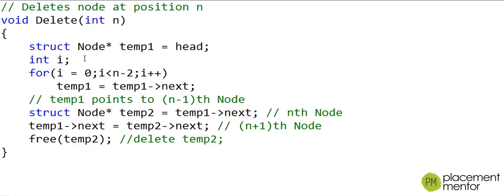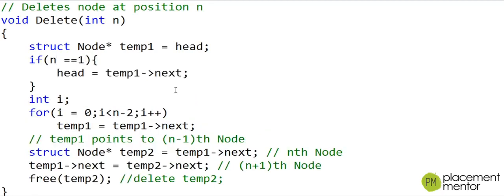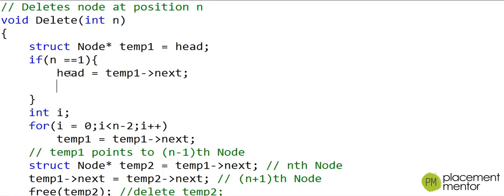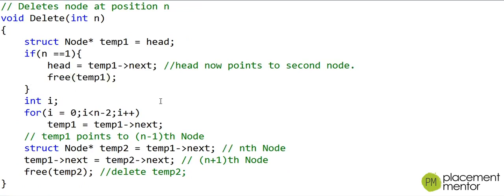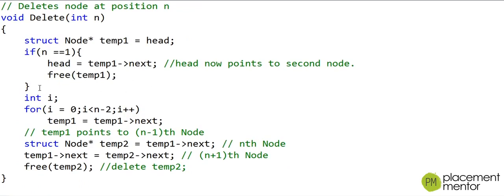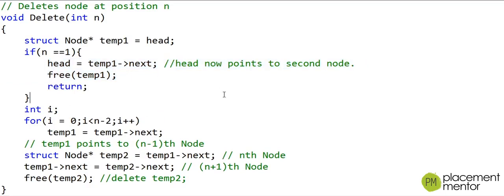We have not handled the special case when we want to delete the head node. If n equals 1, we set head equal to temp1.next. Temp1 is currently equal to head, so head now points to the second node, and temp1 still points to the first node. Links are fixed, so we can free temp1. We add a return statement so this section of code does not execute for the general case.